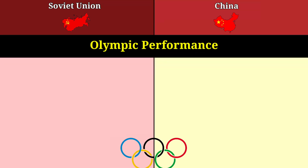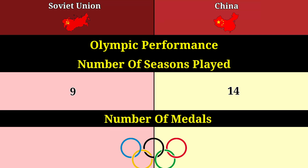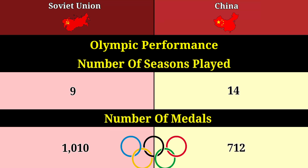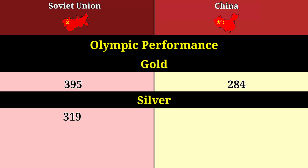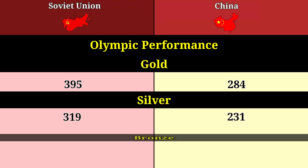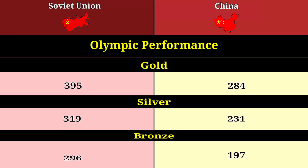Olympic performance. Number of seasons: 9 for the Soviet Union, 14 for China. Number of medals: 1,010 for the Soviet Union, 712 for China. Gold: 395 for the Soviet Union, 284 for China. Silver: 319 for the Soviet Union, 231 for China. Bronze: 296 for the Soviet Union, 197 for China.